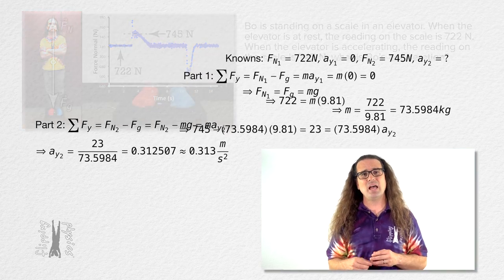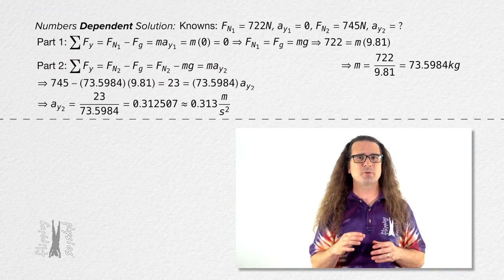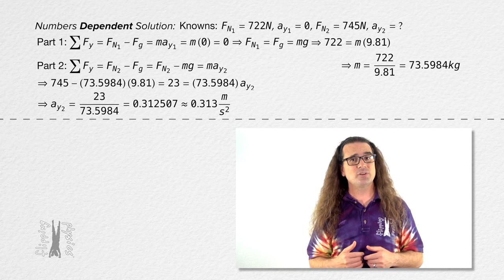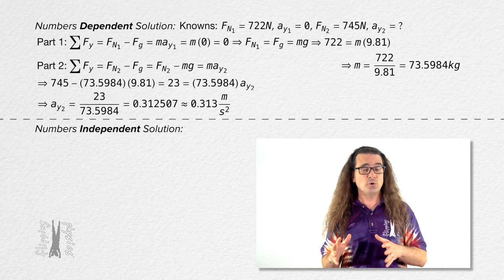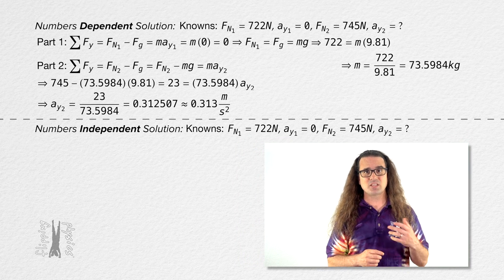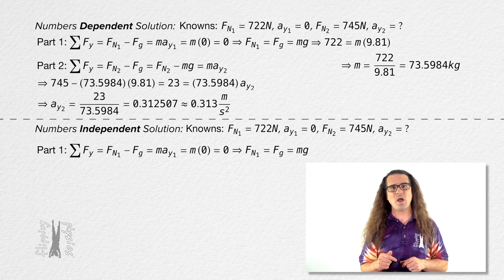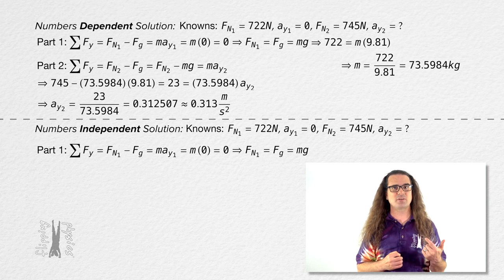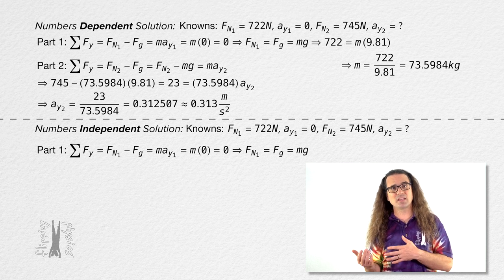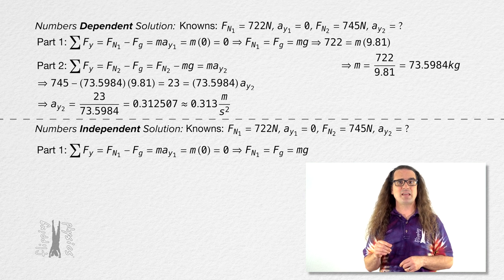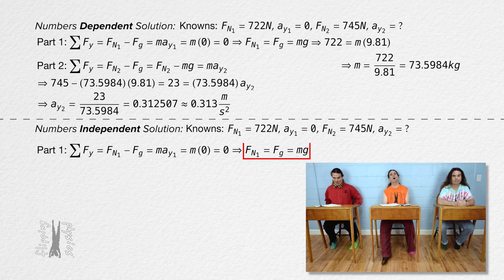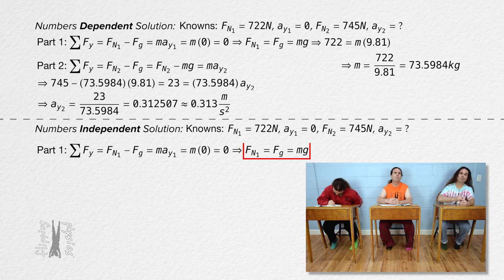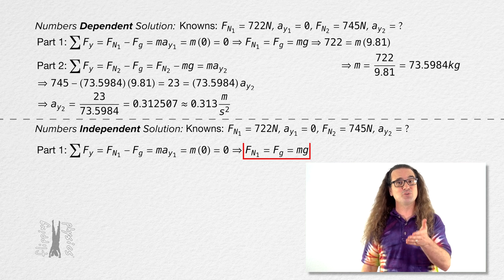What you all did here is what I would call a typical numbers-dependent solution. I am now going to walk through my solution to this problem where I let go of my numbers dependency. The knowns are the same as before. I sum the forces in part one in exactly the same way. However, when I get to the point where force normal one equals mass times acceleration due to gravity, instead of plugging in numbers, I'm going to pause there and put that equation in my equation holster — for use in the future.